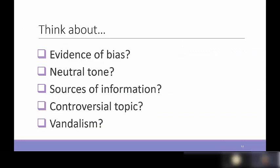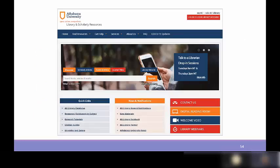As we wrap up, here are the main evaluation questions to keep in mind when looking at a Wikipedia article: Is there evidence of bias? How controversial is the subject? Is the information presented with a neutral tone? Where does the information come from? Do contributors cite verifiable sources? And has the article been subject to repeat vandalism? Remember, Wikipedia should only be used as a launch pad to more extensive research in scholarly sources.